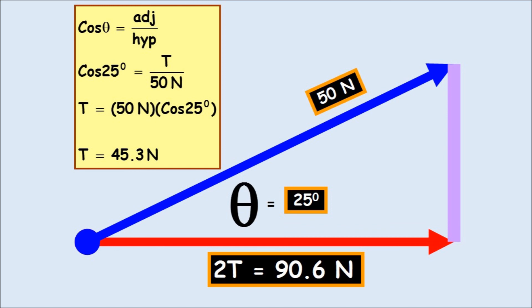And multiplying that by two, two times the tension, two times 45.3 Newtons is going to be 90.6 Newtons.